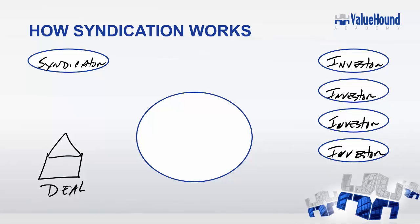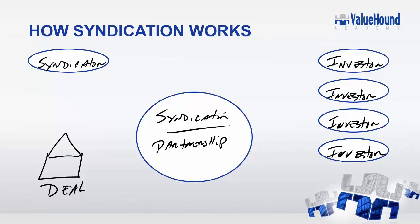The fourth player in the game is the syndication itself — or let's call it the partnership agreement. That agreement could be a corporation, an LLC, a general partnership, a limited partnership — it can be anything. This is the ruleset of the game that joins everybody together: the syndicator, the deal, and the investors.